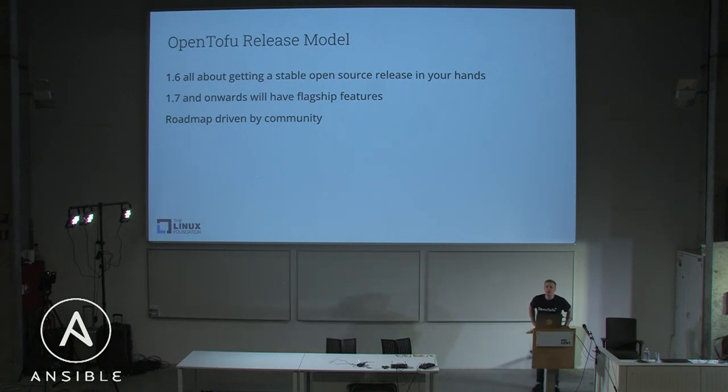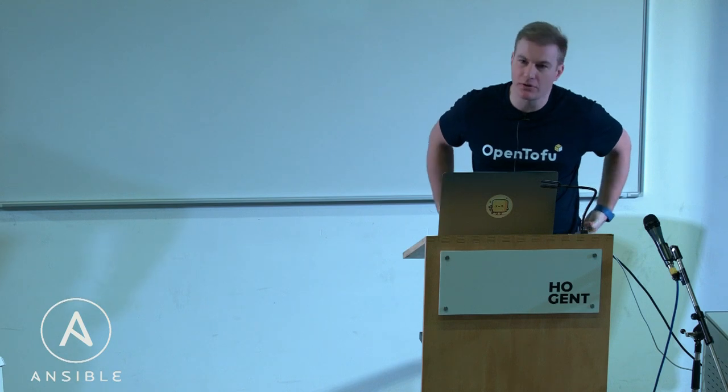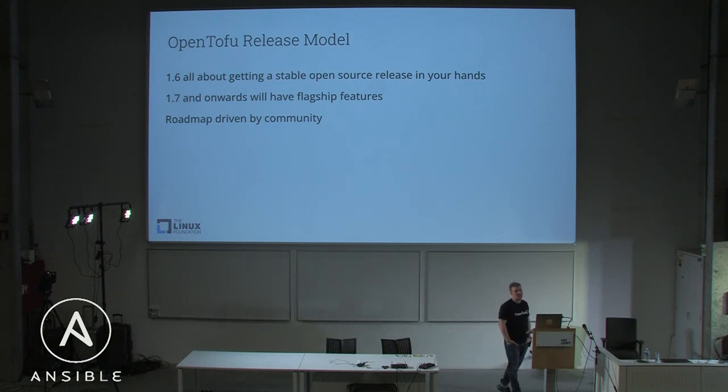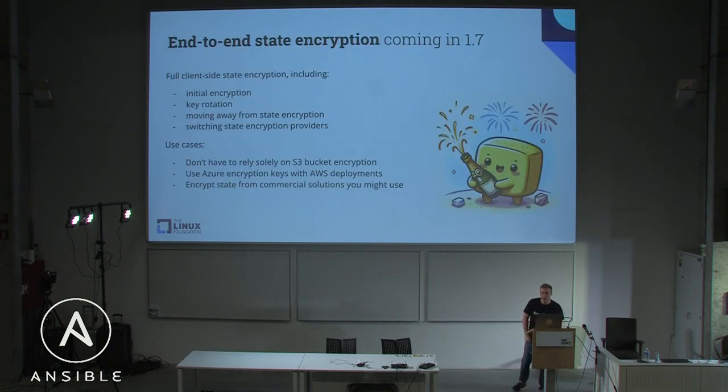A little bit about the release model. 1.6 was really about getting a stable release into your hands as fast as possible — we've done that. There's no compelling reason to use 1.6 other than it being open source under the MPL. But starting with 1.7, every new release will have a flagship feature, which hopefully will be compelling enough to help you make the arguments inside your organizations to make the switch. We're a community-driven project, so if you have workflows you want to see improved, let us know.